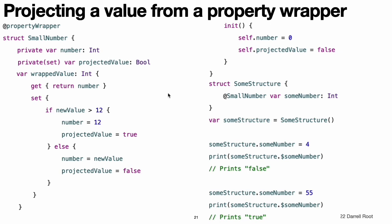In the SmallNumber example, if you try to set the property to a number that is too large, the property wrapper adjusts the number before storing it. This code adds a projectedValue property to the SmallNumber structure to keep track of whether the property wrapper adjusted the new value before storing it. Writing someStructure.$someNumber accesses the wrapper's projected value. After storing a small number like 4, the value of the projected value is false. However, the projected value is true after trying to store a number that is too large, like 55.